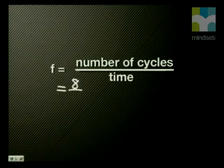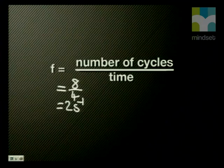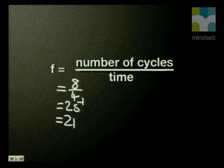We'll start by finding the frequency. Remember, frequency is the number of cycles per second. In this example, there are eight cycles in four seconds, so we have to divide the number of cycles by the time in seconds. So eight cycles divided by four is two. The frequency of this wave is two cycles per second, or two Hertz.